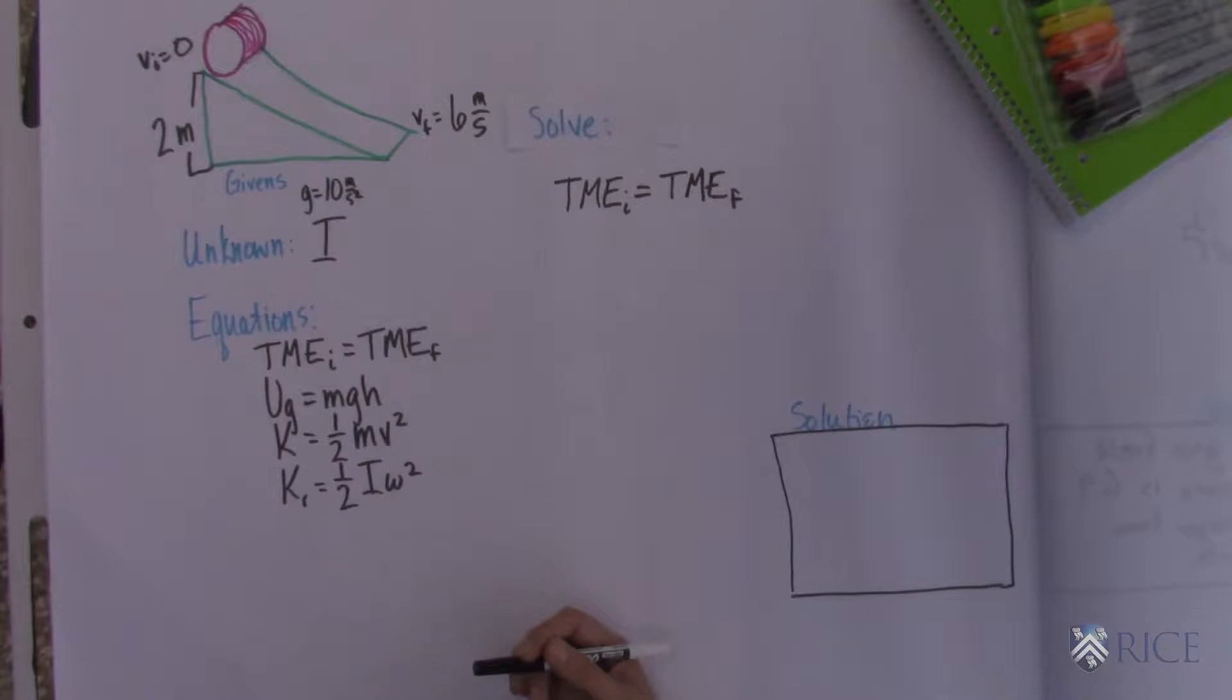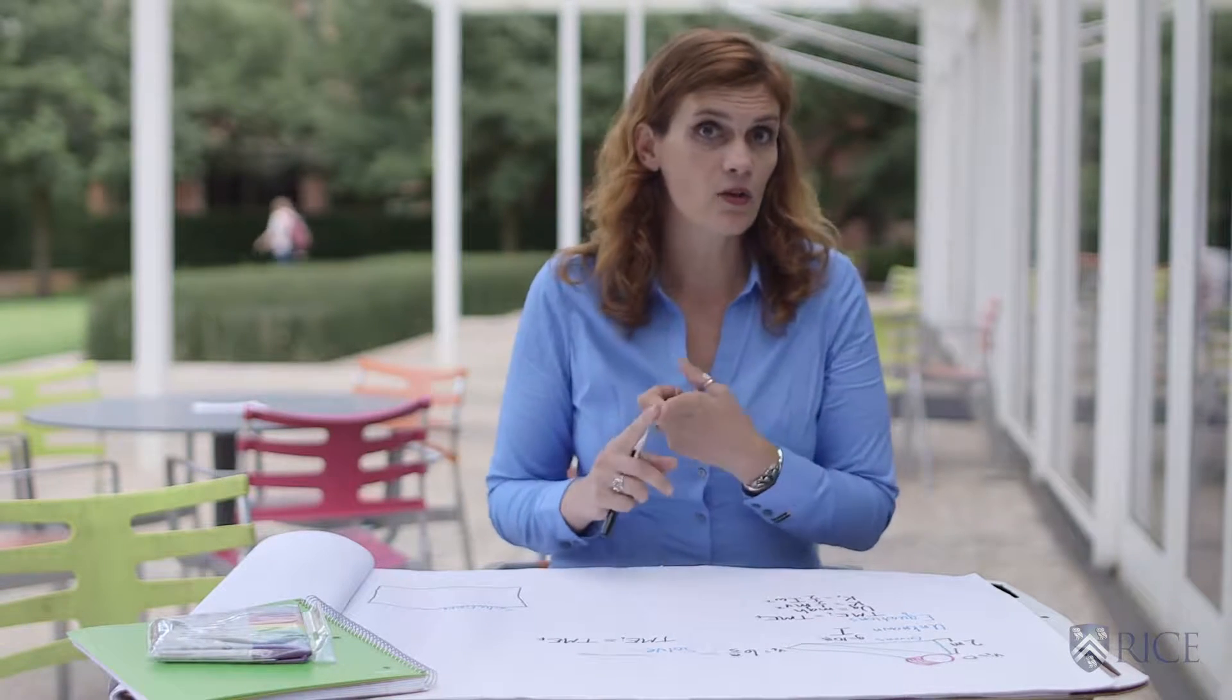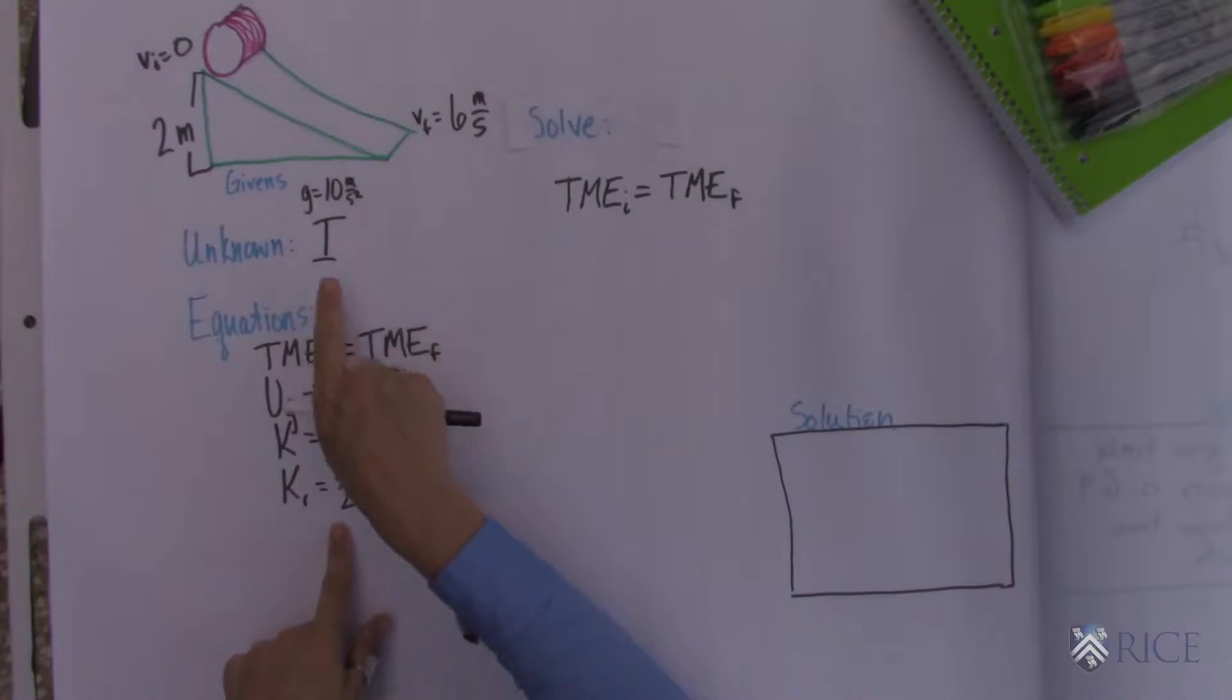And the question says to express the moment of inertia as a multiple of m and r, where m is the mass of the object and r is its radius. So remember that we're doing rotation. So when we're talking about mechanical energy, we might need to think about our rotational energy. So here is the unknown as I.